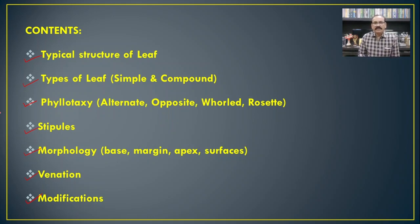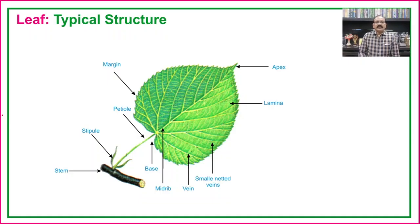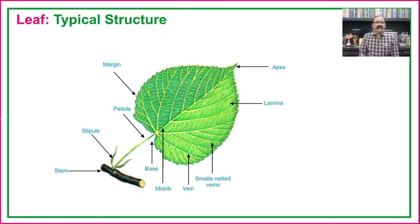Most of the topics included in this lecture are important from an exam point of view for UG and PG. The typical structure of the leaf usually has a question in the UG exam, and it includes the different parts which we have already seen in earlier lectures of this series.